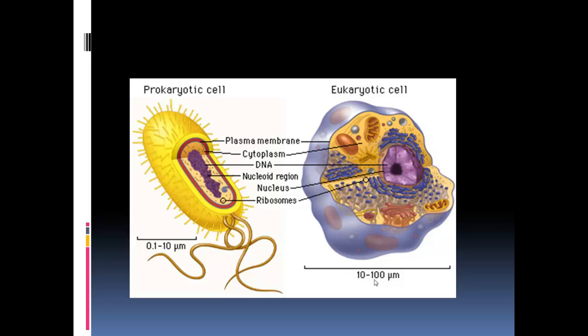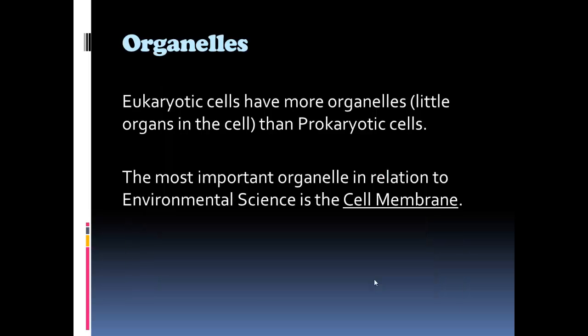There are a couple of different organelles in a eukaryotic cell that are not in a prokaryotic cell. Eukaryotic cells have more organelles — organelles are little organs in the cell — than prokaryotic cells. But the one we are going to focus on most in environmental science is the cell membrane.